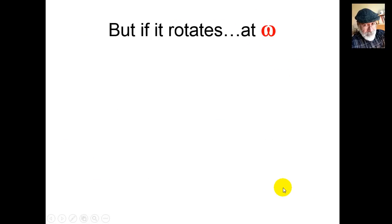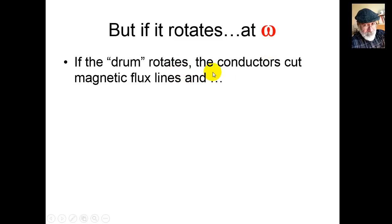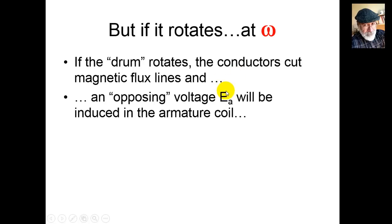That moving coil is called the armature. The armature current times k times the flux per pole, that is induced torque. But once the torque appears, that rotor will start to move at a velocity of omega radians per second. Once it rotates, the conductors will cut the magnetic flux lines and a voltage will be induced in that coil, in that moving coil, in that armature coil.